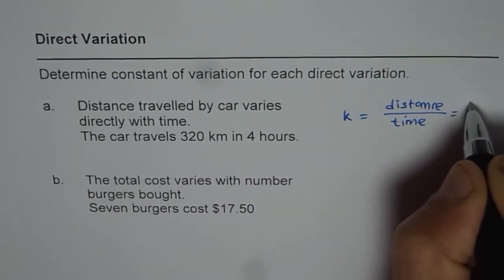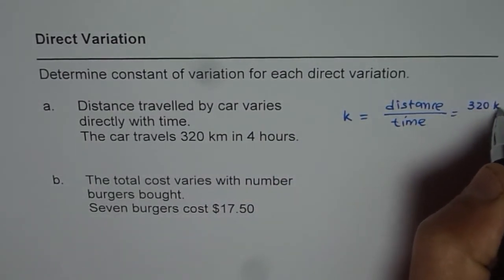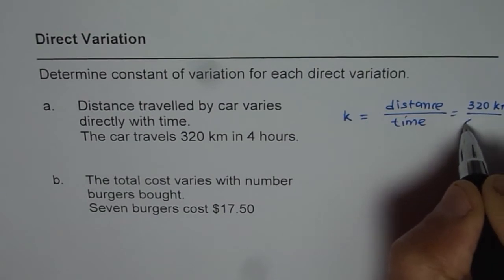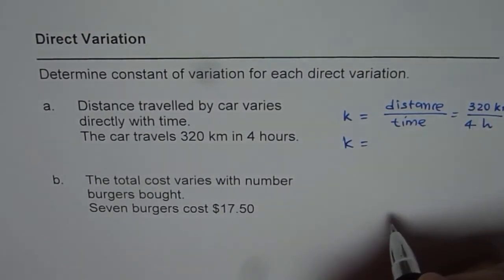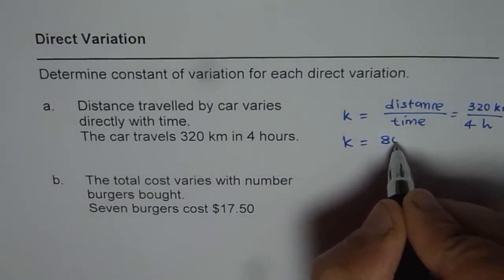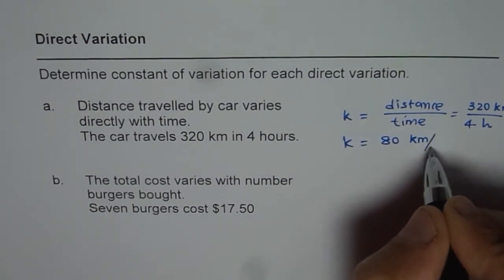In this case, distance is 320 km and the time is 4 hours. So, the constant k is equal to 320 divided by 4, which is 80 km per hour.